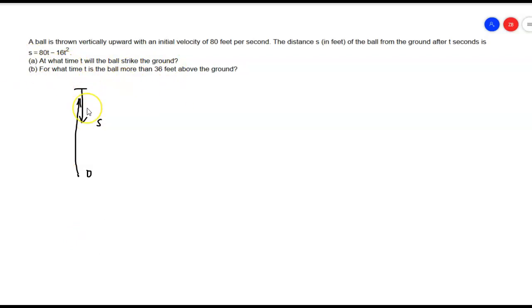The first one says, at what time t will the ball strike the ground? We want to know when s is equal to 0, because we're going to throw it up, and then we want to know how much time does it take to get back down to 0.